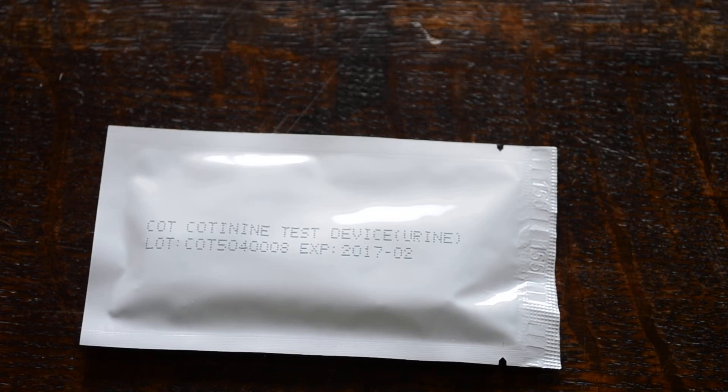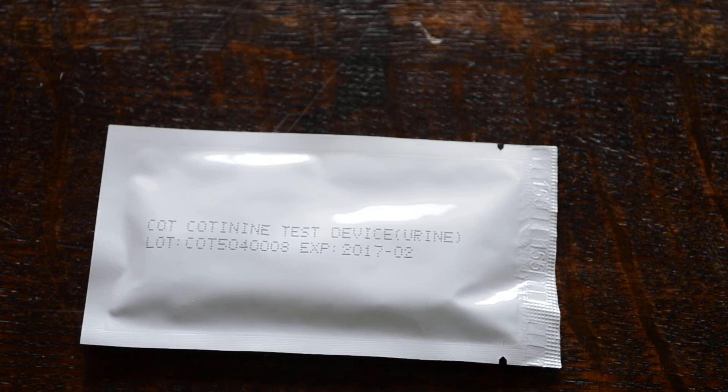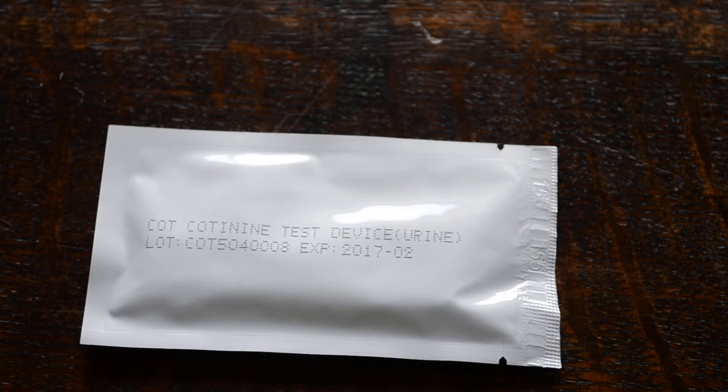Welcome to this video presentation. We're going to show you today the cotinine test device. Cotinine is the first metabolite of nicotine, so this is a smoking detection test. The cutoff is set at 200 nanograms, which means it will not indicate any passive inhalation of smoke. The cutoff is simply too high for that.